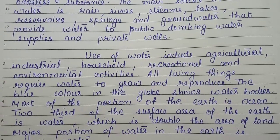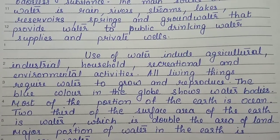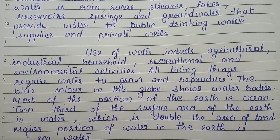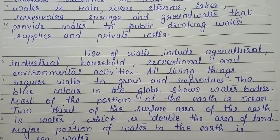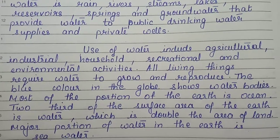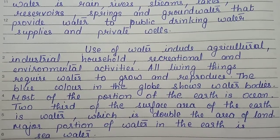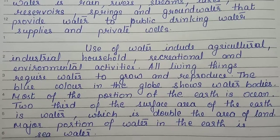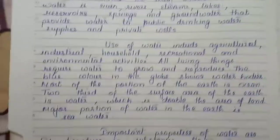All living things require water to grow and reproduce. The blue color in the globe shows water bodies. Most of the portion of the earth is ocean. Two-thirds of the surface area of the earth is water, which is double the area of land. The major portion of water on earth is sea water.